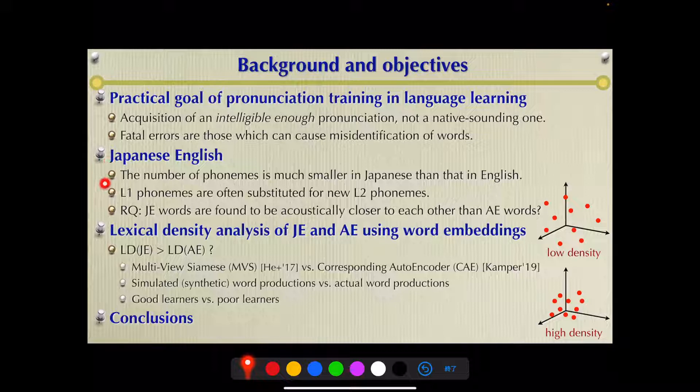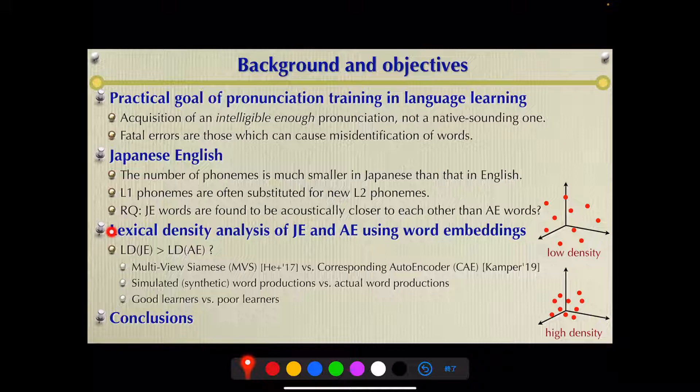The number of phonemes is much smaller in Japanese than in American English. Generally speaking, learners often substitute their own L1 phonemes for new L2 phonemes, and thus it is expected that JE words are found to be acoustically closer to each other than American English words. In this work, lexical density analysis is conducted using word embeddings. Lexical density of Japanese is compared to that of American English under several conditions.